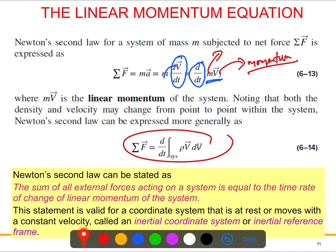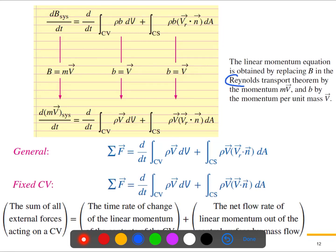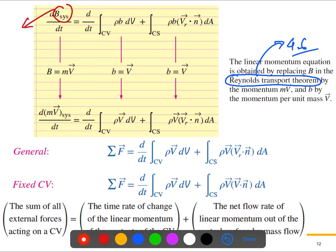This equation applies for a solid or a fluid, but it is limited in fluid mechanics since we usually model flow systems as control volumes. So we cannot use it directly for all problems. To make it easier, we'll use a new concept called the Reynolds Transport Theorem — found in section 4.6 of your book — for a moving system and a fixed control volume.